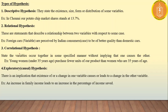Third is correlational hypothesis, which states that two variables occur together in some specified manner without implying that one causes the other. Two variables are occurring in a particular situation but do not affect one another — there is no cause-and-effect relationship. Fourth is exploratory hypothesis, which involves a cause-and-effect relationship — the existence of one variable changes or causes changes in the other variable.